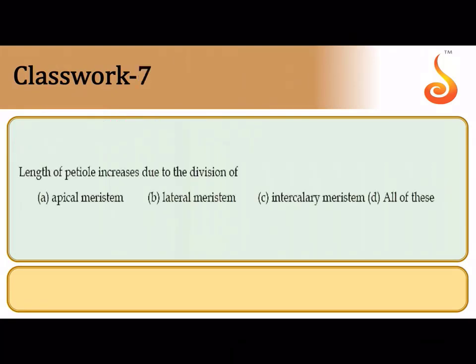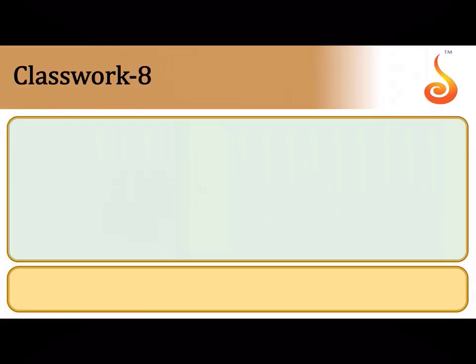The length of the petiole increases due to intercalary meristem — a special meristem left behind by the growing axillary bud. Intercalary meristem is a primary meristem intercalated with mature tissue, left behind by the apical meristems found at the growing ends of the plant.